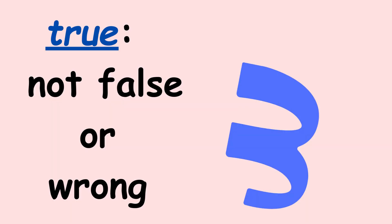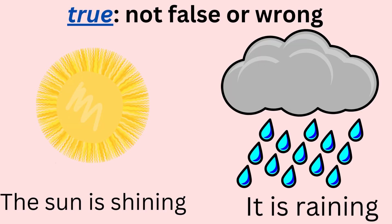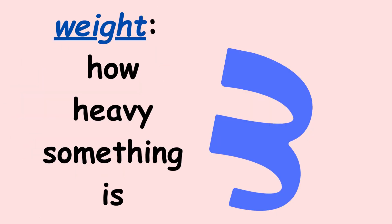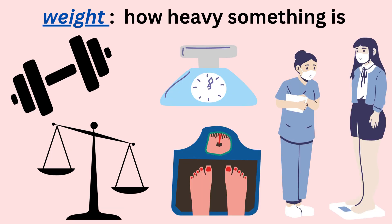True: not false or wrong. It is true that the sun was shining this morning and now it is raining this afternoon. Weight: how heavy something is. You can measure your weight on the scale.